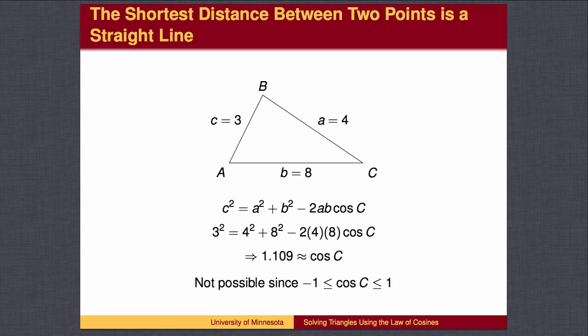Sometimes, you cannot find an angle with the given cosine value. What went wrong? The distance from A to C is 8. If we take any other path from A to C that is not a straight line, it must be longer than 8. But the remaining two sides have a total length less than 8, which is too short to reach.